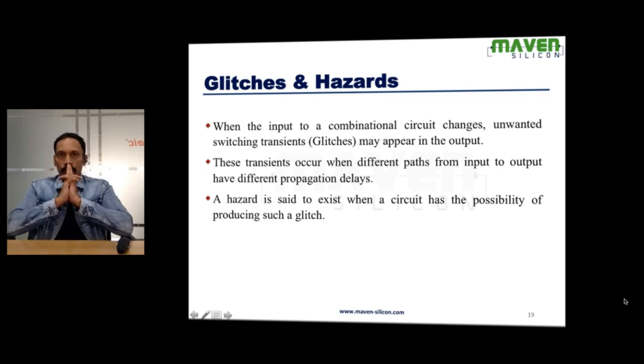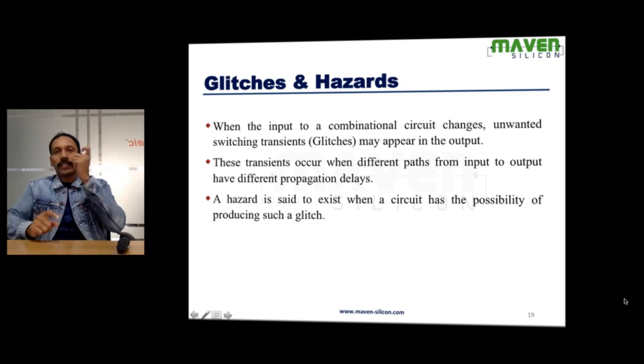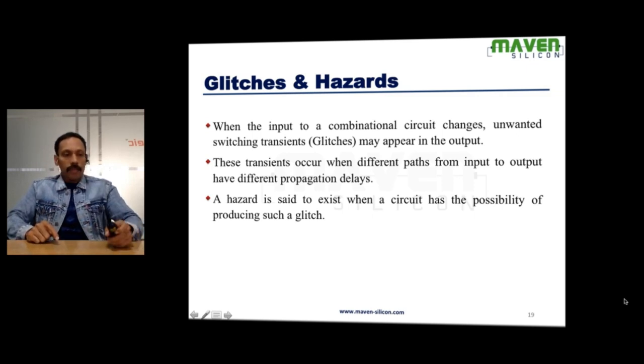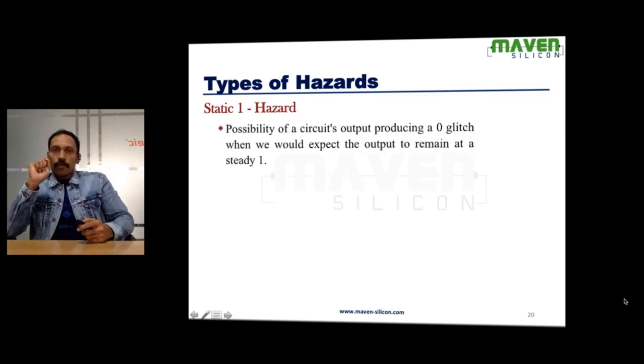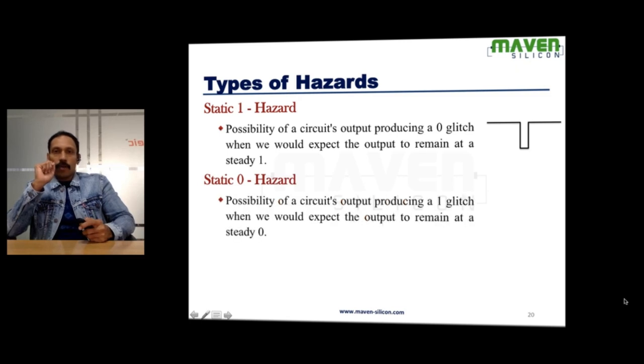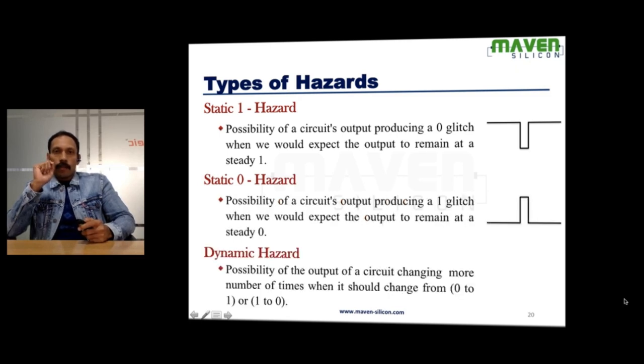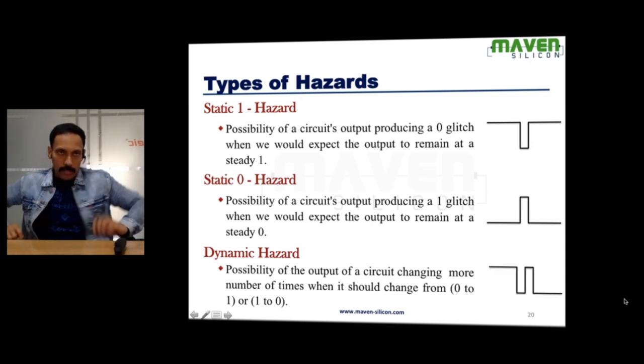So, a hazard is said to exist when the circuit produces such a glitch and we can classify these hazards into Static 1 Hazard, Static 0 Hazard and Dynamic Hazard. Now, let's look at one by one.